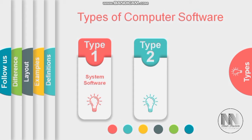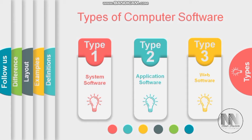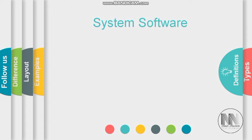Computer software can be classified into three types. The first is system software, the second is application software, and the third is web software, also called web-based software.